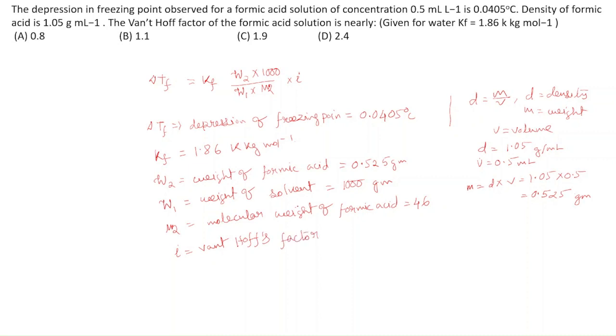By putting these values, we get ΔTf = Kf × W2 × 1000 / (W1 × M2 × i). So, ΔTf is 0.0405, and Kf is 1.86.